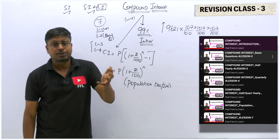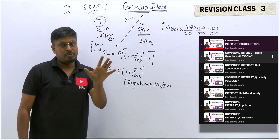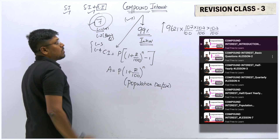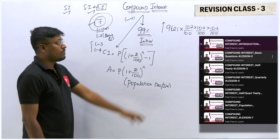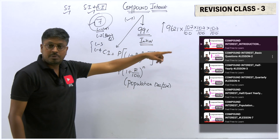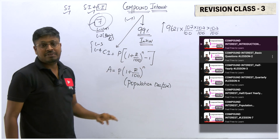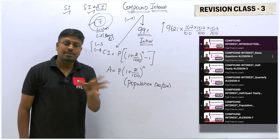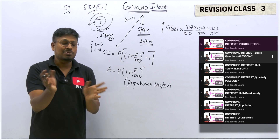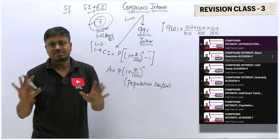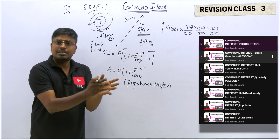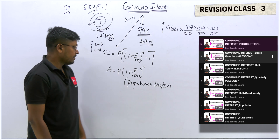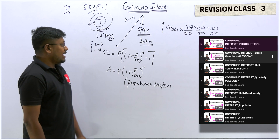Lesson two covers basic questions. Lessons three and four cover the concept of half-yearly and quarterly, and population-based equations. Lesson seven covers the T1 and T2 year concept, which is also very important. If you watch all seven videos, you can solve 80% of compound interest questions from any book. With the remaining 20%, if you know the concept well, you can solve those too.